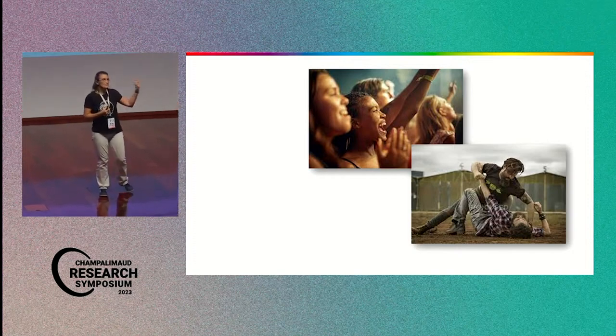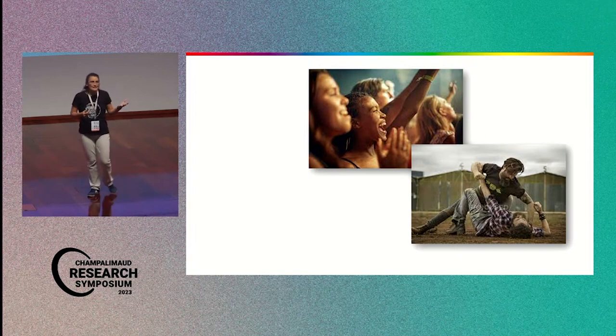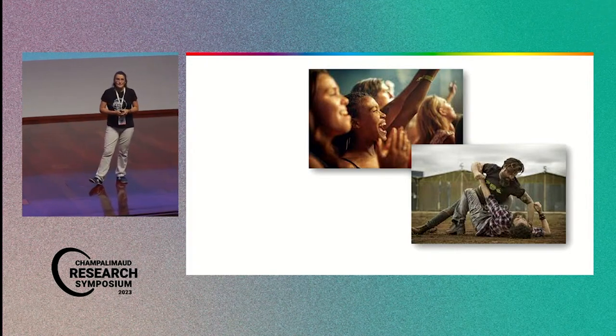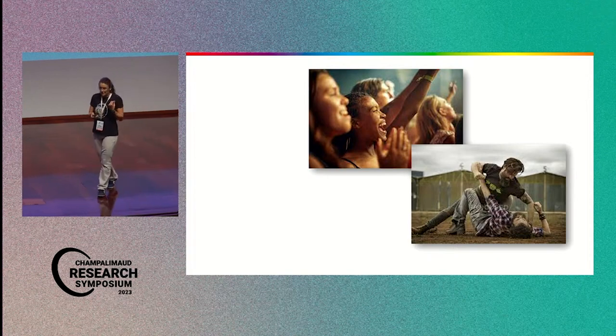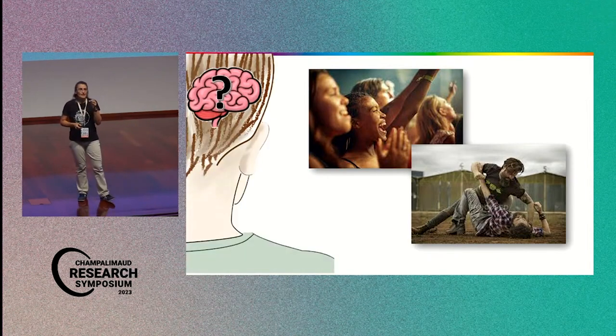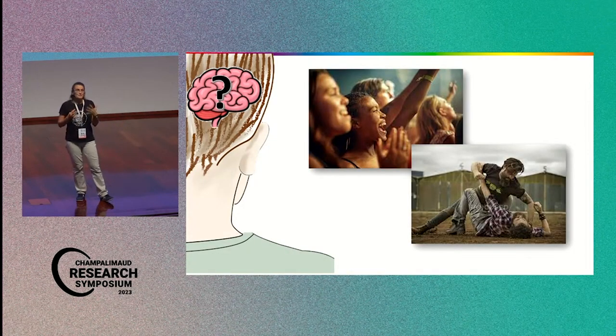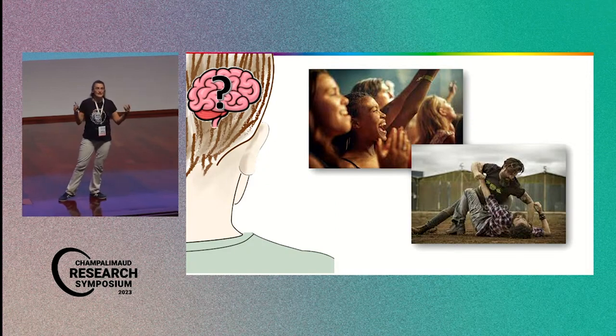At the same time, if instead you see two people fighting on the street, you don't just see them fighting. You perceive the strength of the aggressor from the speed of the movement, the muscles. You can also perceive the anger or the pain of the guy on the floor. What we are interested in the lab is trying to understand what brain mechanisms actually allow us to have this perception of the state of the other and how the state of others affects ourselves as well.